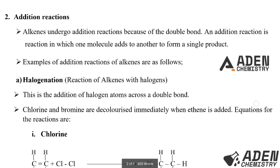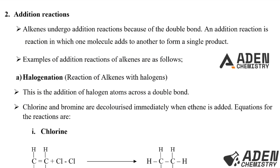Number two: we proceed to addition reactions. Alkenes undergo addition reactions because of the double bond. An addition reaction is a reaction in which one molecule adds to another to form a single product. Examples of addition reactions of alkenes are as follows. Number one: halogenation.